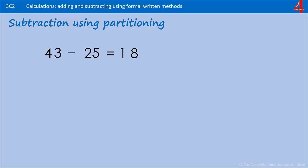One method that's taught at school when children are learning to use formal methods for written subtraction is using partitioning. Here's an example of how partitioning works. Here we have 43 take away 25, and one way this could be written out.